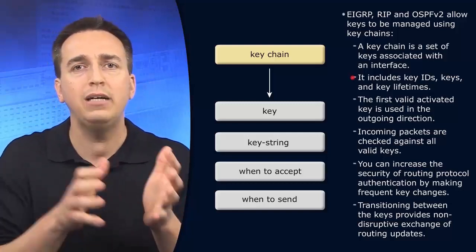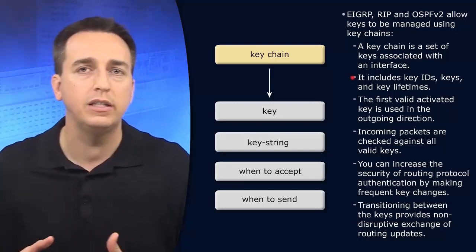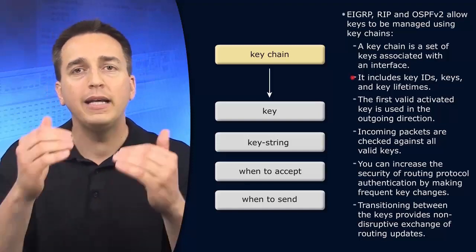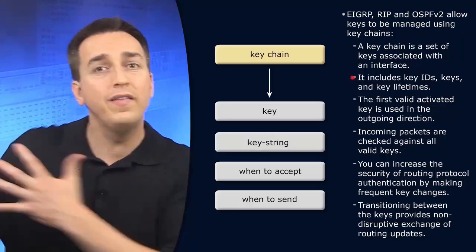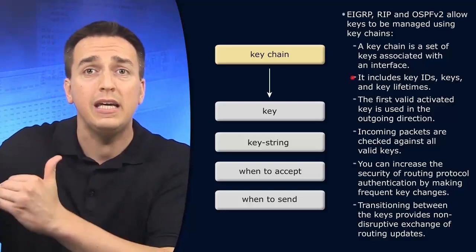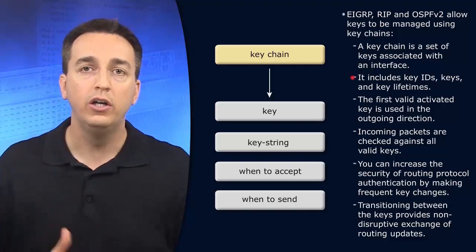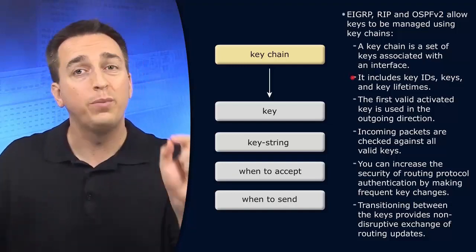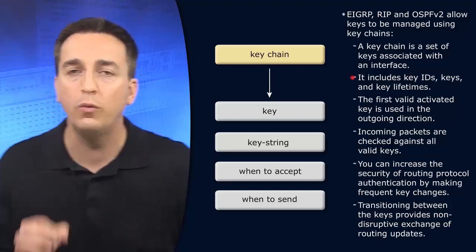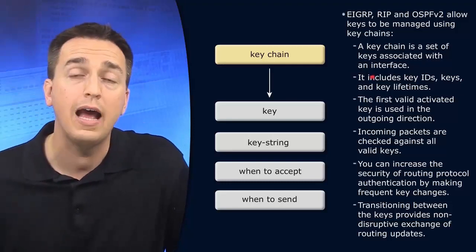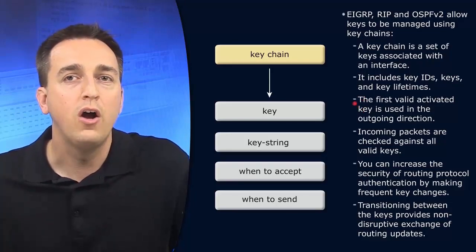However, the keys are going to have to match. If I am using key 1 to perform authentication, then the other router must be using key 1 as well. If my key has a key string of, say, 'Cisco,' then that neighboring router's key 1 would also have to have the key string 'Cisco.' Key chains don't have to match, but the key ID and the key string inside that key must match between neighboring routers to successfully perform authentication.